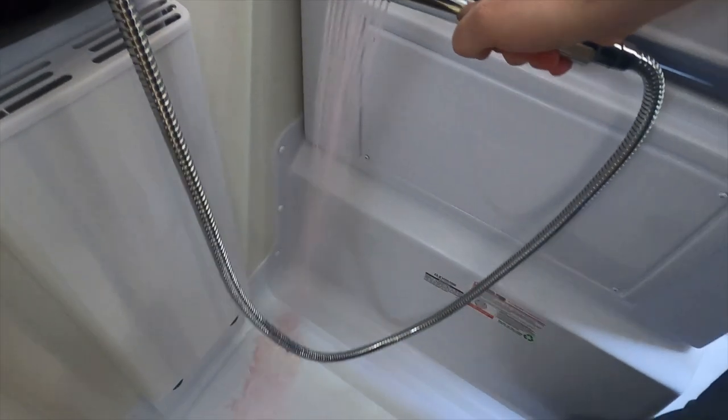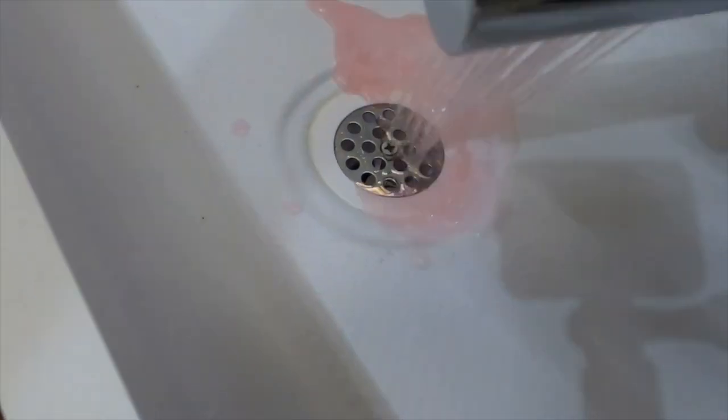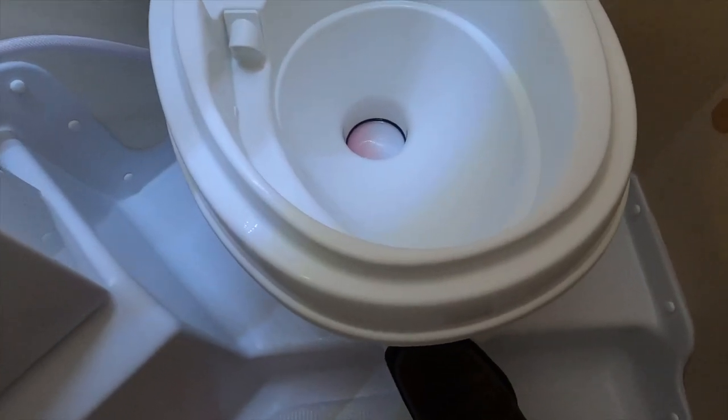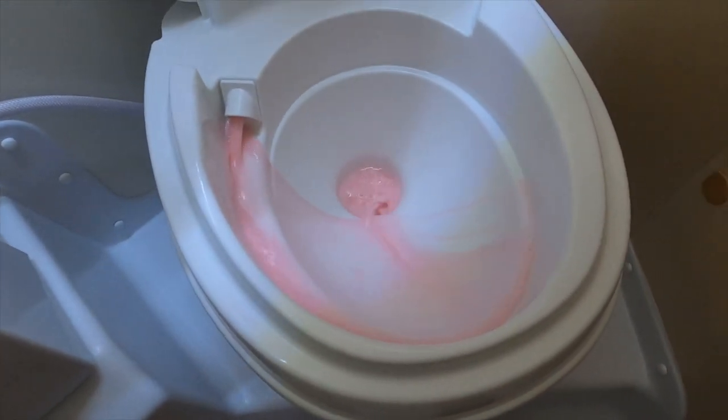Then turn on the shower. You'll want to put some antifreeze down the shower drain to keep the trap in good condition. Go ahead and put some antifreeze in the toilet as well to protect the shutter valve.